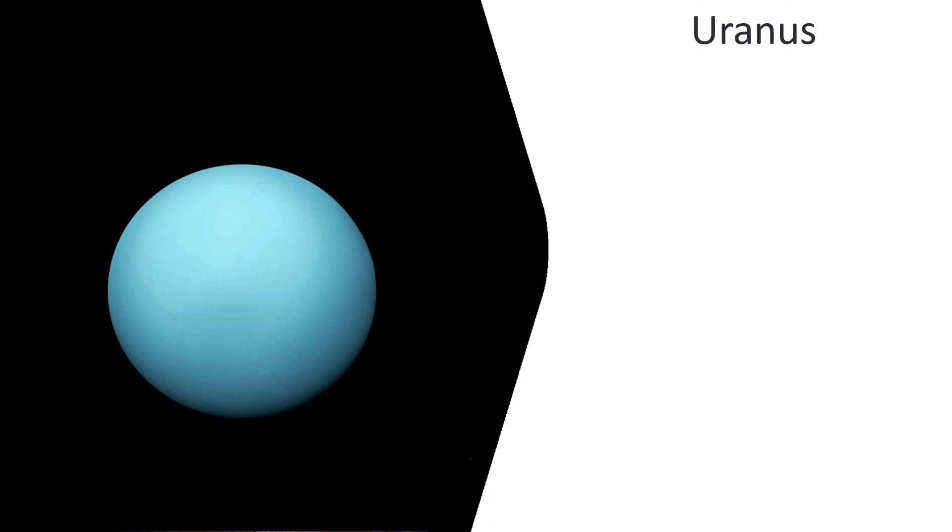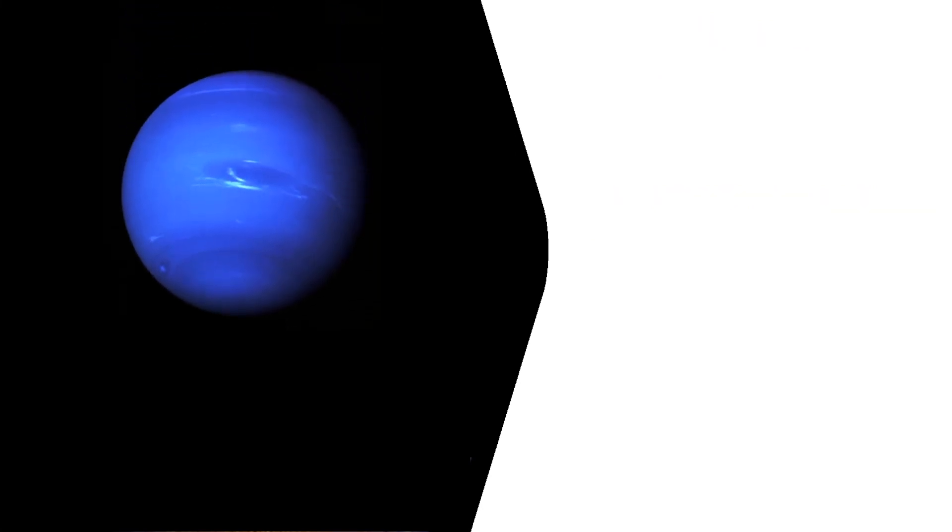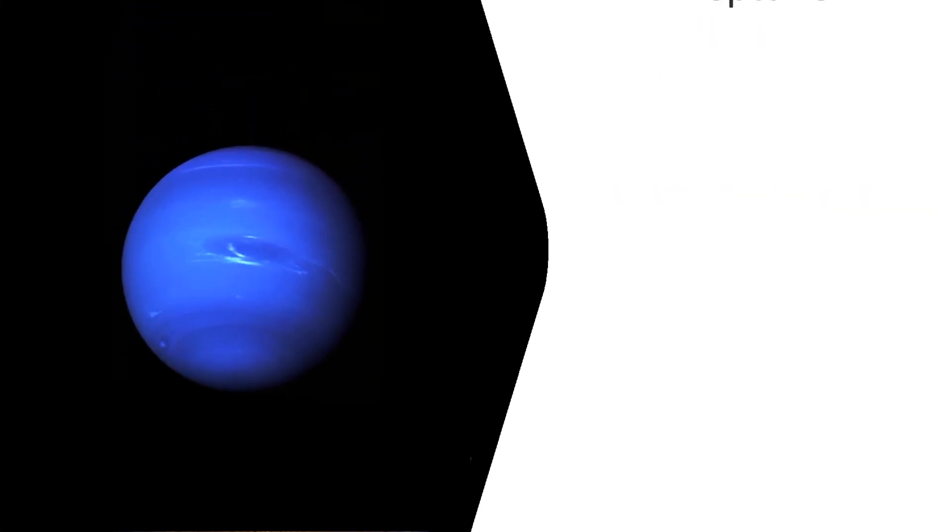Uranus. It rotates around the Sun in 84 years. Its size is 51,118 kilometers in diameter. It is surrounded by a system of nine rings.